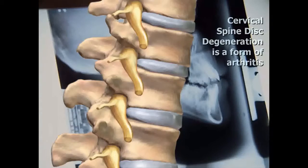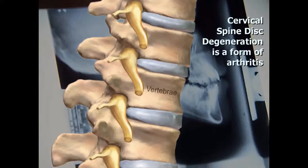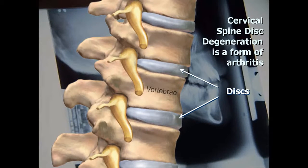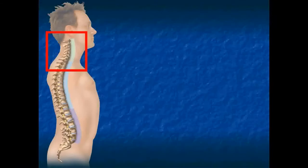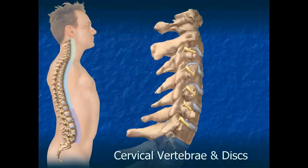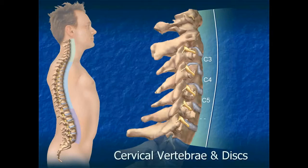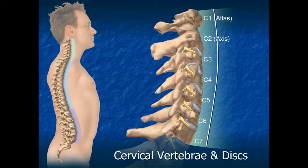Cervical spine disc degeneration is a form of arthritis. Discs are located between each vertebra of the spinal column. The cervical spine is considered to be the first seven vertebrae at the top of the spinal column, extending from the base of the skull to the upper back. The vertebrae are individual bones attached to each other by a multitude of small ligaments and spinal facet joints.